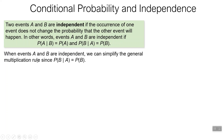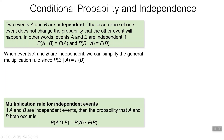Now, this can change our multiplication rule. Instead of having to use the conditional probability for the second event happening, we can just use the probability of that second event happening. So before, the probability of A and B was the probability of A times the probability of B given that A happened first. But now this simplifies to just the probability of A times the probability of B — which makes our lives a little simpler.